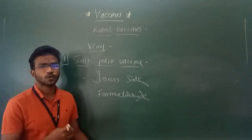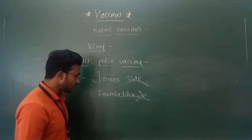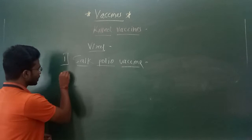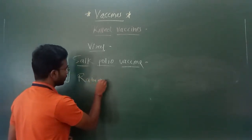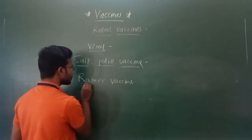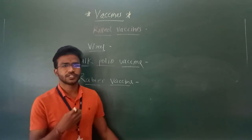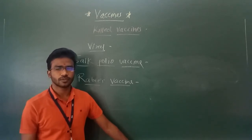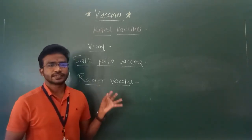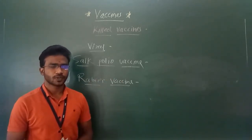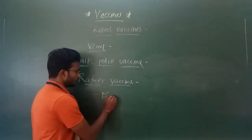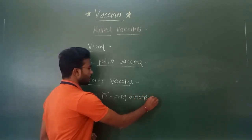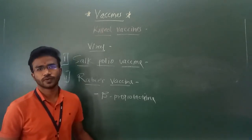The Salk polio vaccine is an example of the killed or inactivated type of vaccine. Formalin is used to inactivate the polio virus. The second example is the rabies vaccine. Rabies mostly affects the nervous system. The rabies vaccine is prepared by inactivating the rabies virus with the help of beta-propiolactone. Beta-propiolactone is used for inactivation of the rabies virus.